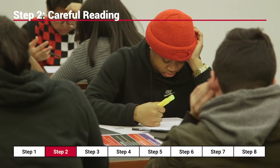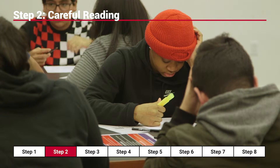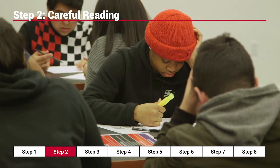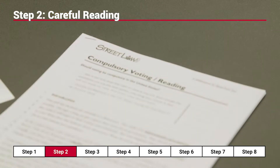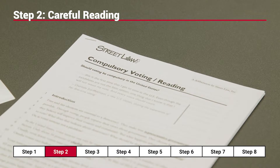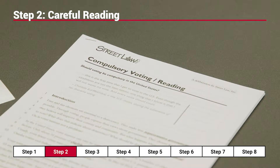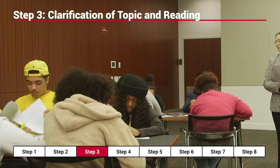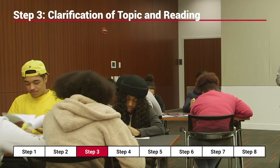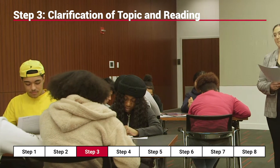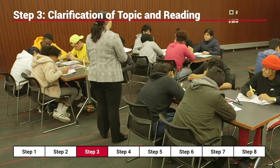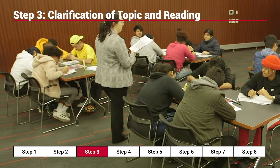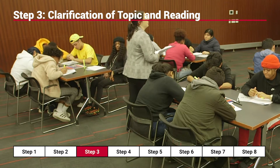The next step is for students to carefully read the deliberation text. Each deliberation reading has been carefully constructed to provide balanced arguments. While reading, students should identify confusing terms and note interesting facts or ideas. The third step is clarification of the topic and reading. During this time, define and discuss important vocabulary terms as a whole class, and ask clarifying questions to ensure students understand the main ideas from the text.